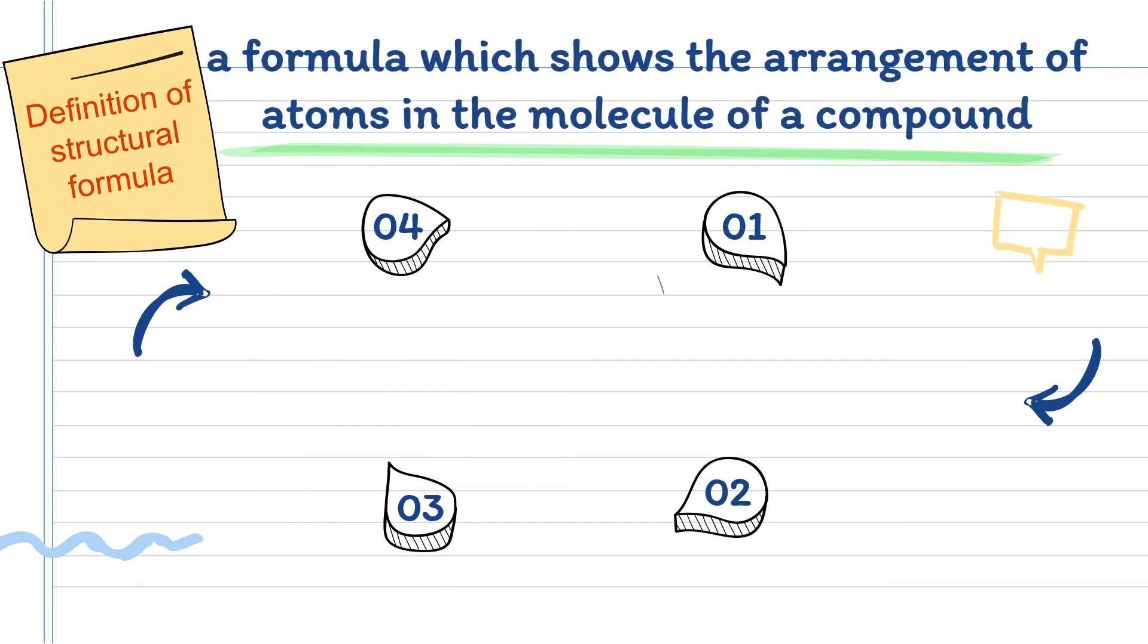Structural formula is a formula which shows the arrangement of atoms in the molecule of a compound. It shows how the atoms are bonded to each other in space.